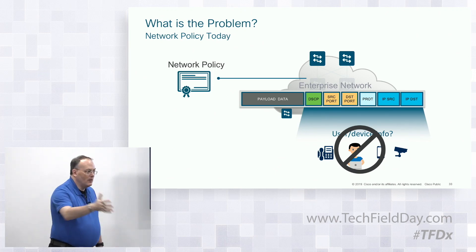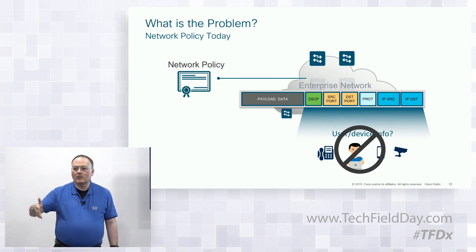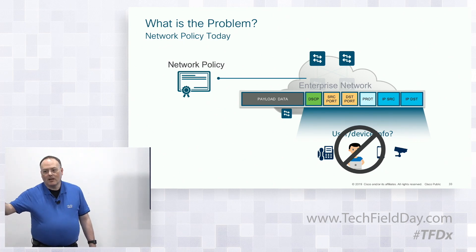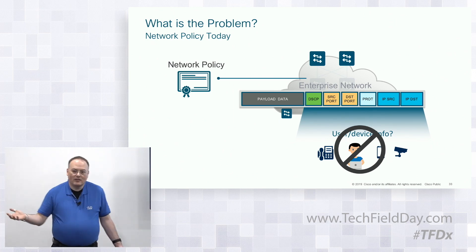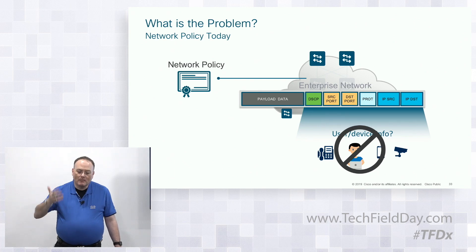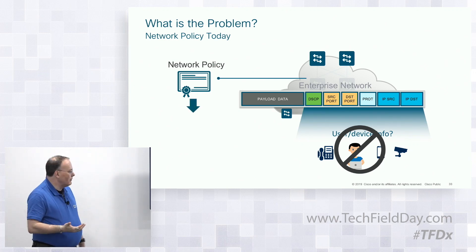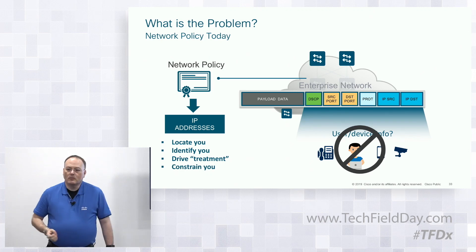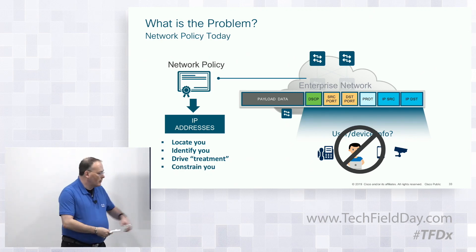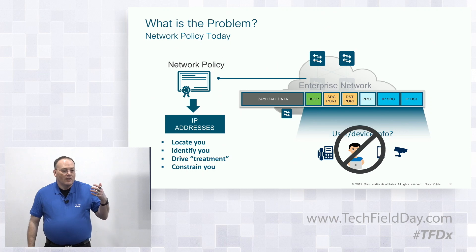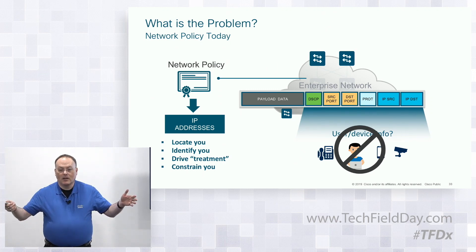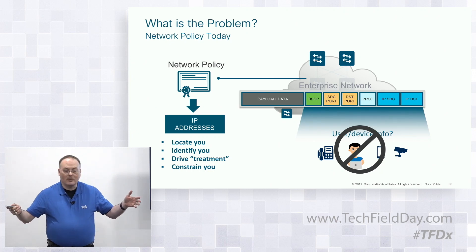If the only tool you have is a hammer, everything is a nail. We solve everything with VLANs — IP phones, video cameras, door locks, badge readers: more VLANs, more subnets, more complexity. This makes networking so complicated and hard to move forward that it's really an impediment to getting things done in many organizations. Because we overload that IP address with meaning, it also drives important constraints. For example, how many times do customers get a request to extend a subnet end-to-end across campus?